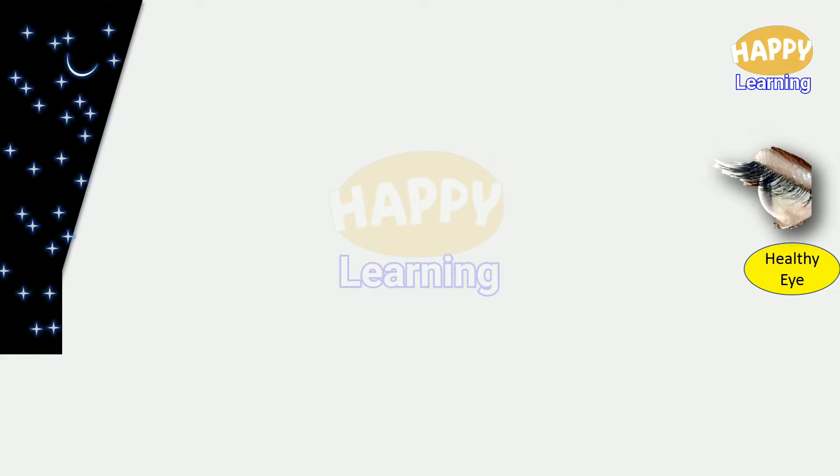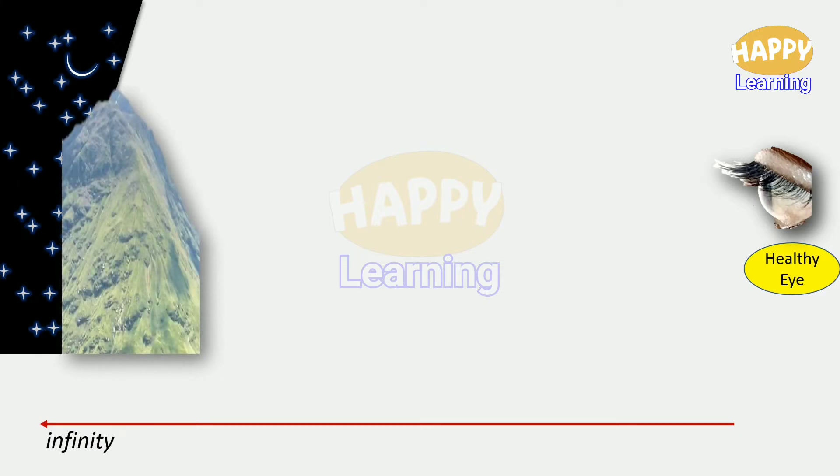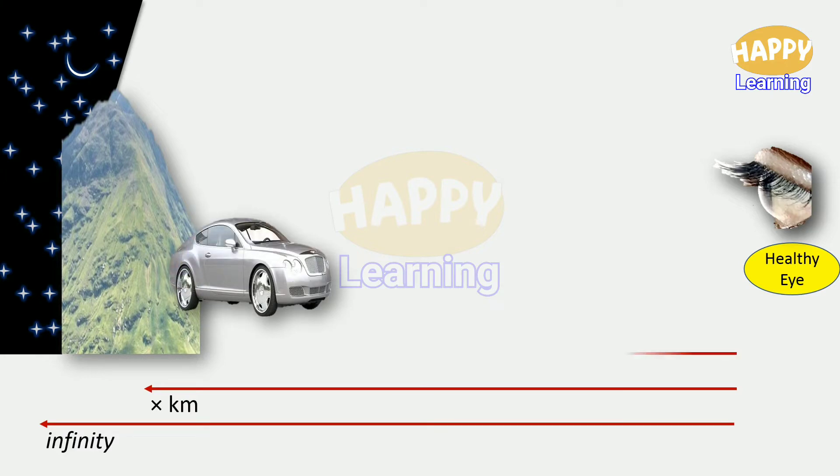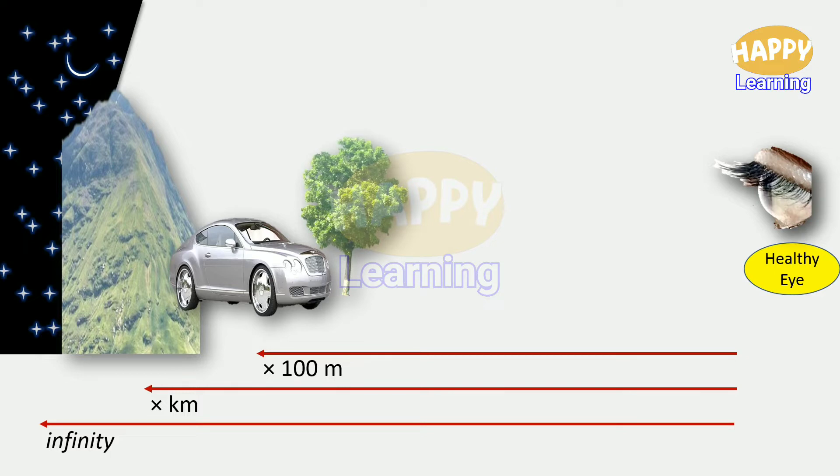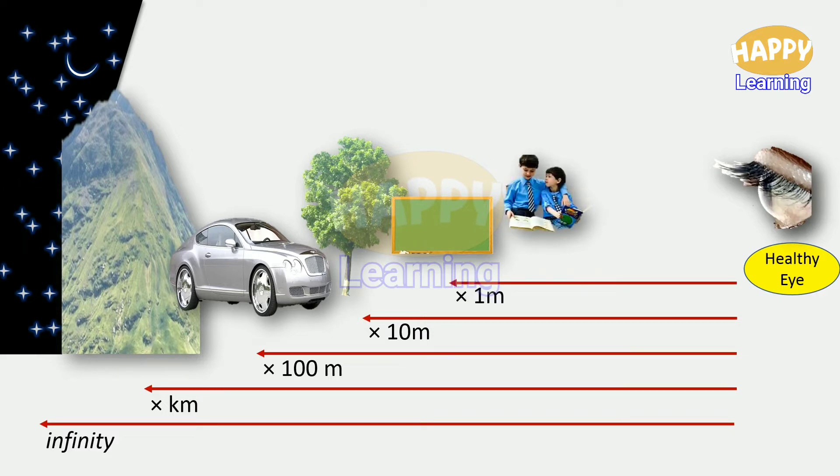There are many objects which are clearly visible to this eye: the stars at infinity distance, mountains at few kilometers, a vehicle passing by at few hundreds of meters, a tree in the garden at few tens of meters, the blackboard few meters, the classmates maybe at half or one meter, a book in his hand exactly at 25 centimeters.